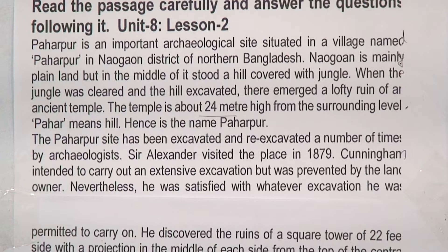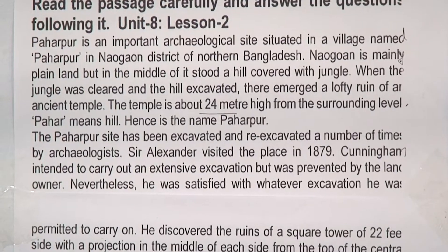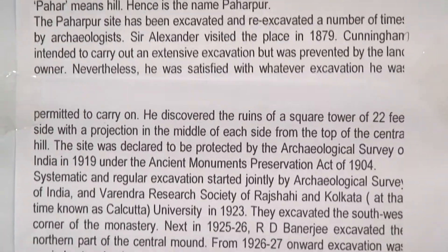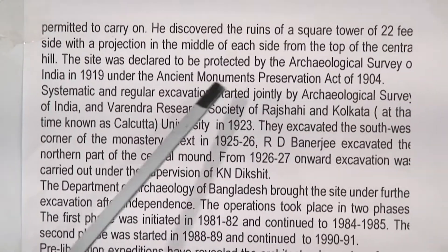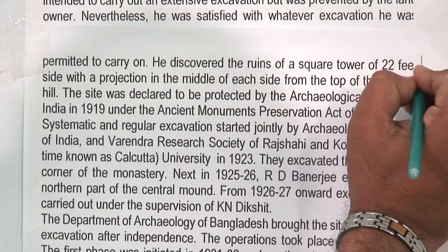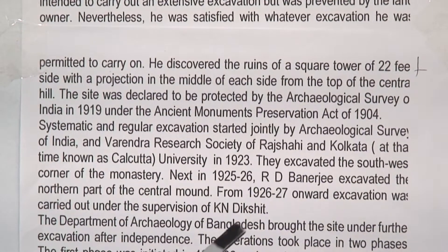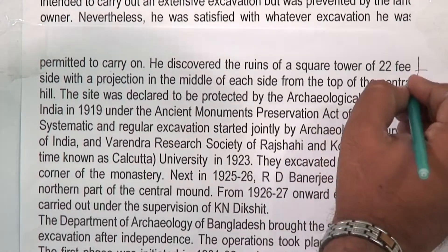Nevertheless, he was satisfied with whatever excavation he was permitted to carry on. He discovered the ruins of a square tower of 22 feet side with a projection in the middle of the east side from the top of the central hill.